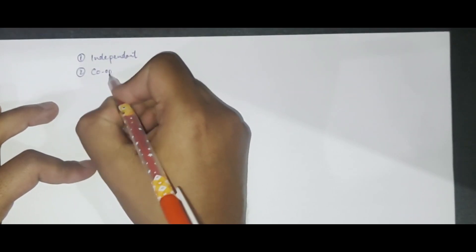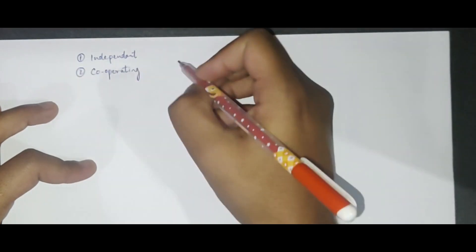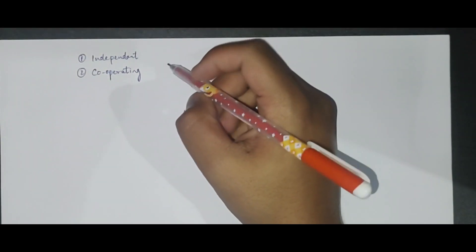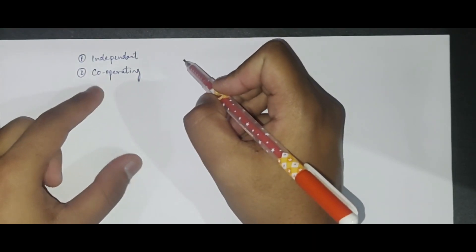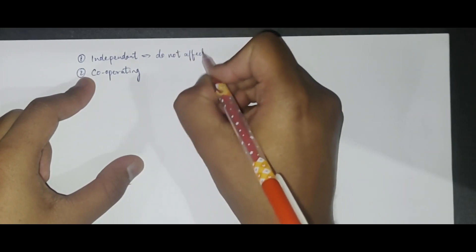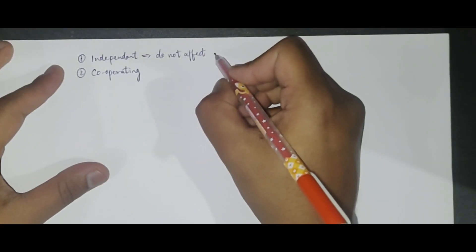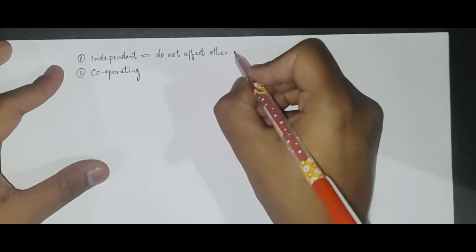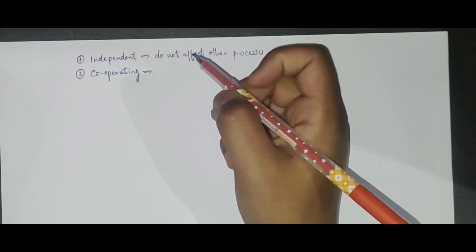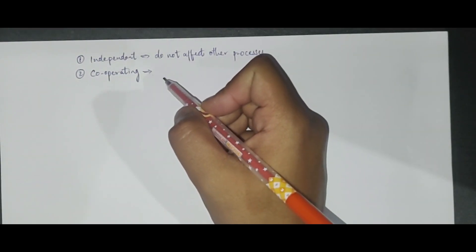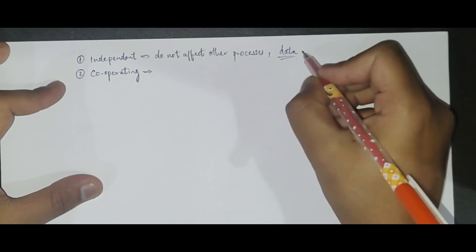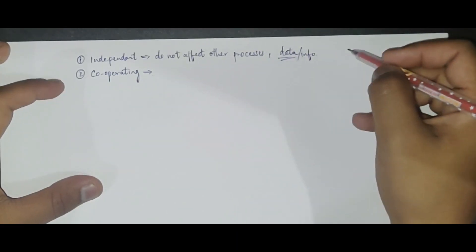Independent processes are those which do not affect any other processes or get affected by any other processes in the system. Cooperating processes, on the other hand, can get affected by some other processes or can affect some other processes. Independent processes won't share data or information among other processes, but cooperating processes will share data and information among other cooperating processes.